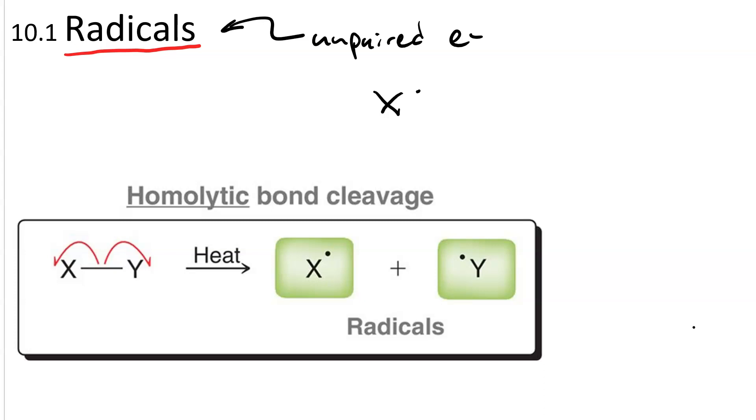Radicals are produced by homolytic bond cleavage. The covalent bond is a pair of electrons. When the bond splits in half and one of the electrons goes to one fragment of the molecule and the other goes to the other fragment, you produce a pair of radicals.